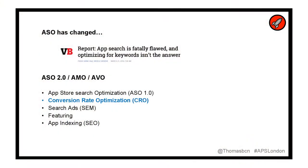ASO has changed a bit. For years we've been hearing about keywords and rankings. But this has changed and there's a lot more behind it. I listed two names behind this change: ASO 2.0 and AMO. It's a more holistic approach — with keywords and ranking, the conversion on your listing, apps now also on Apple featuring, and app indexing.